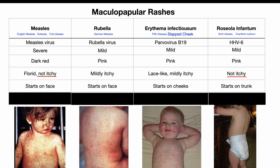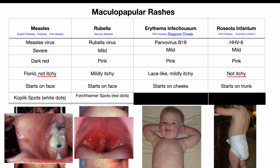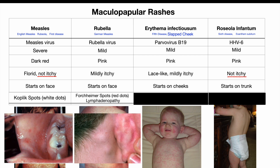The next clues will make it even easier to distinguish between these diseases. We already know about the white Koplik spots of measles inside the mouth that come on even before the external rash. Rubella has something similar called Forchheimer's spots, which are red instead of white and found on the soft palate. You can get swollen lymph nodes with any infectious disease, but patients with rubella often get quite significant lymphadenopathy, especially in the post-auricular, suboccipital and cervical areas.